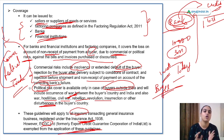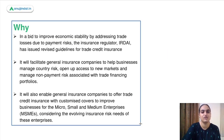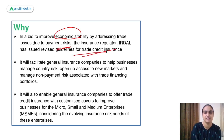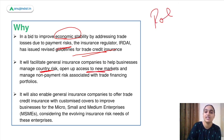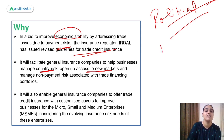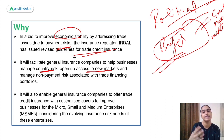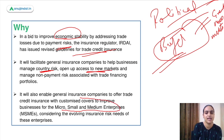These guidelines apply to all insurers transacting general insurance business registered under the Insurance Act. However, the Export Credit Guarantee Corporation of India is exempted. The guidelines were introduced to improve economic stability and address trade losses due to payment risk, facilitating insurance companies to help businesses manage country risk and open up to new markets, including for MSMEs.